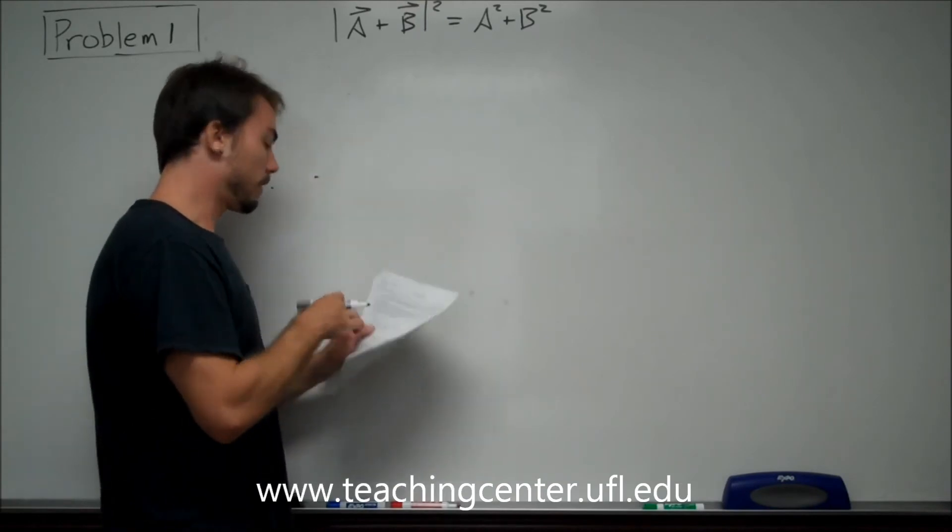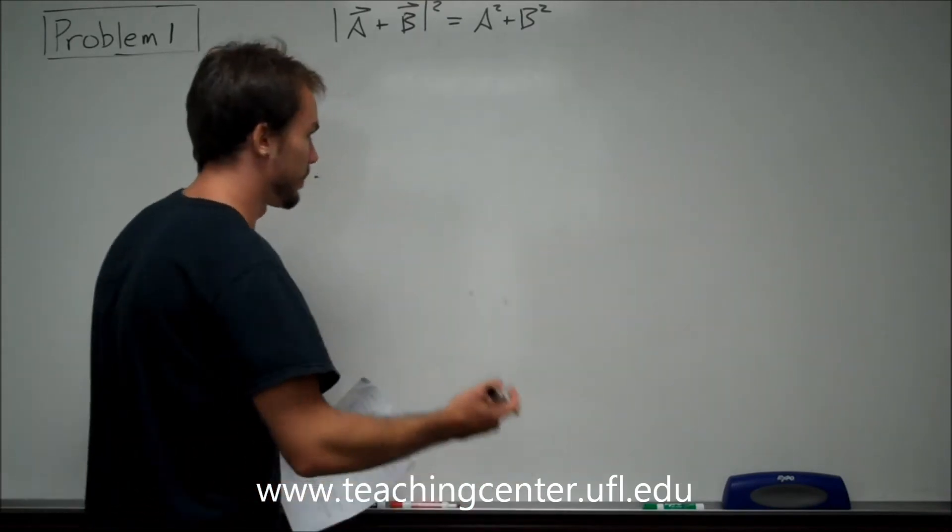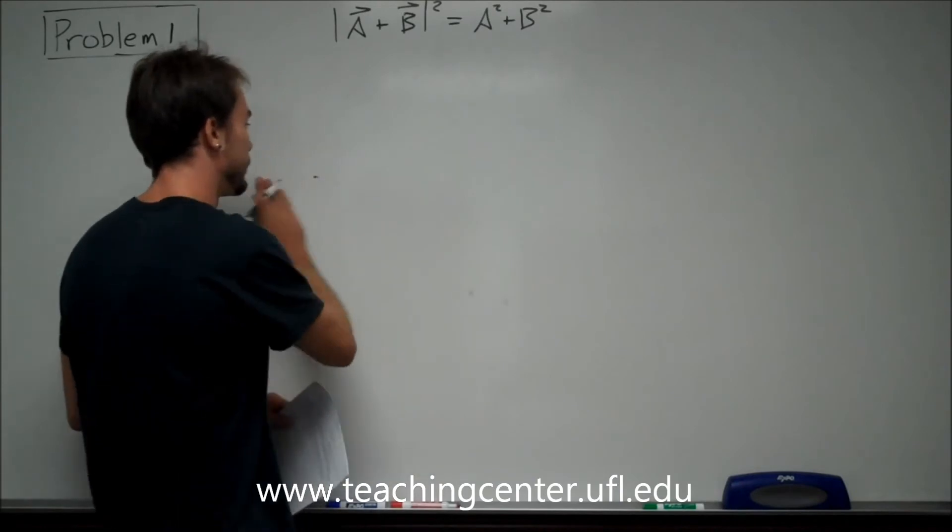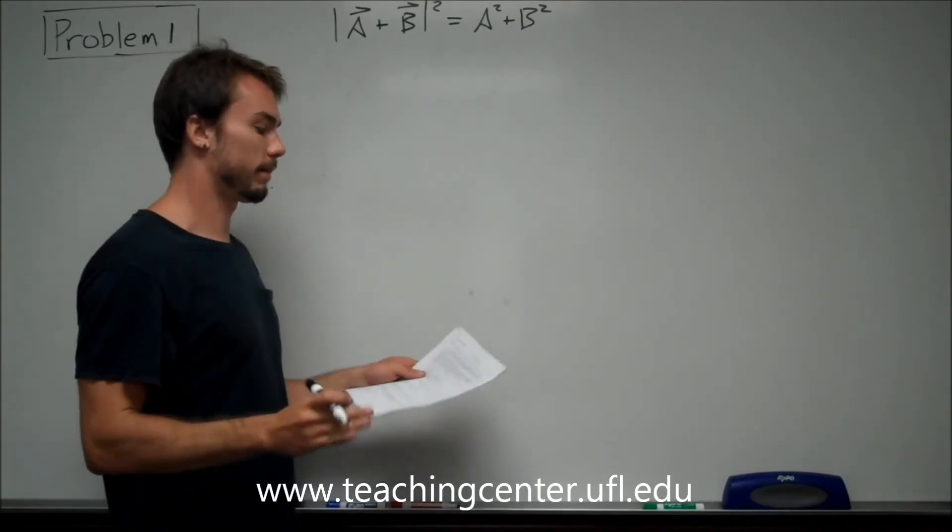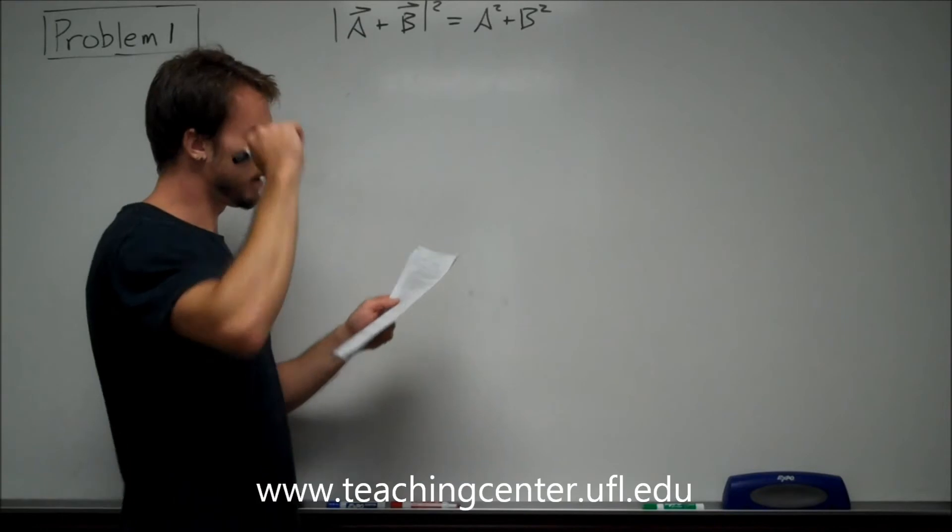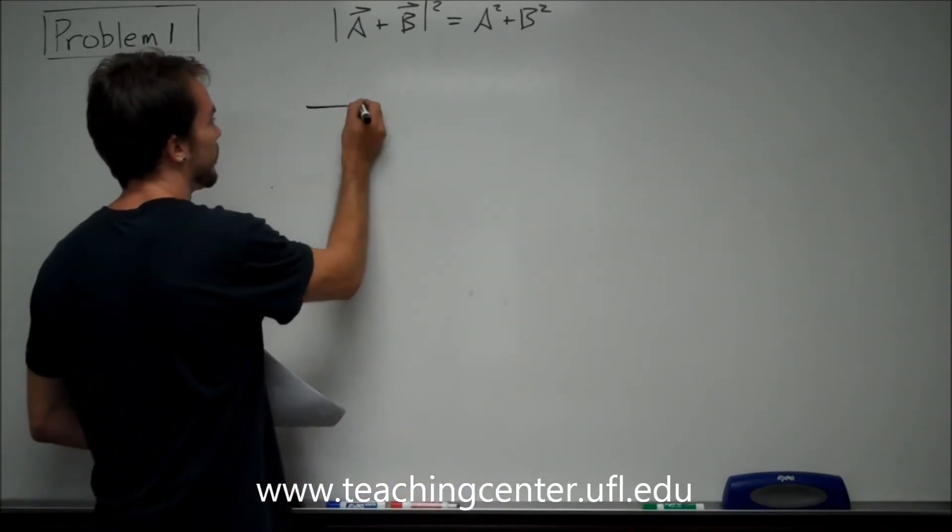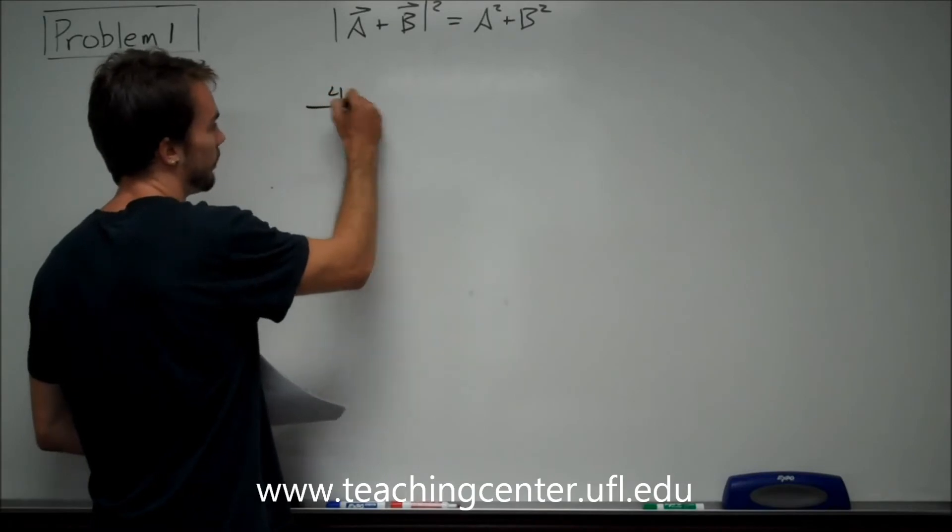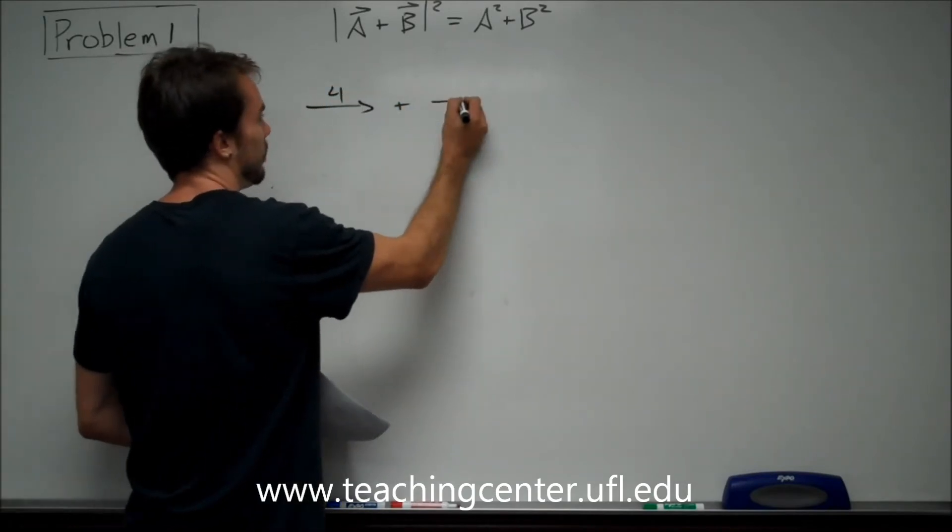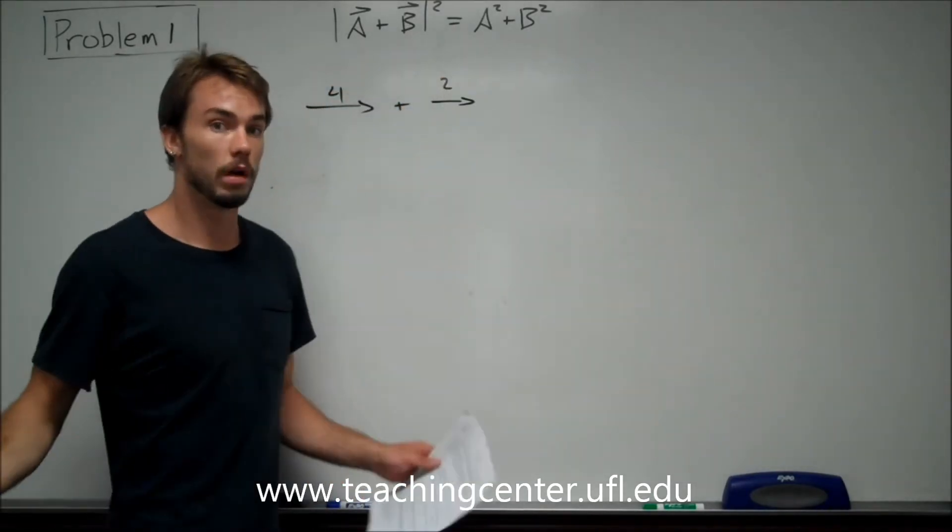You need to look through all your answers, especially if there's a none of these answer, unless you know exactly that one of them has to be true. A and B must be parallel and in the same direction. Let's look at that. So let's say we have some vector A equal to 4 and B equal to 2.